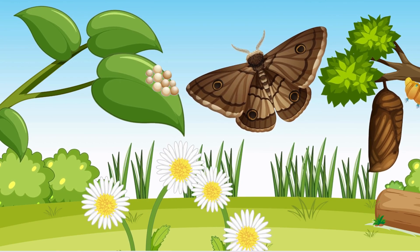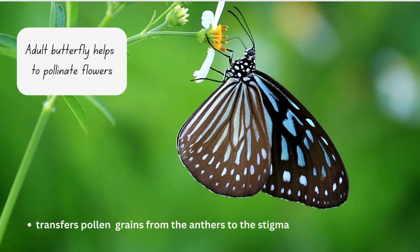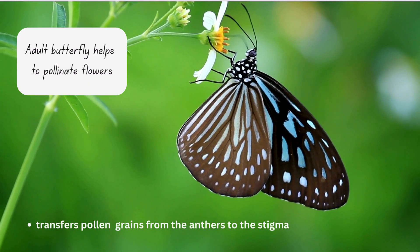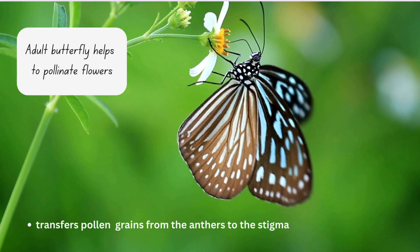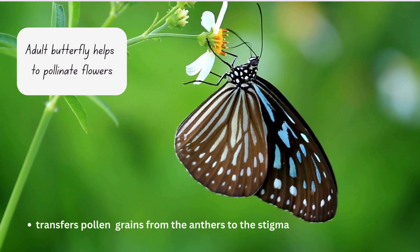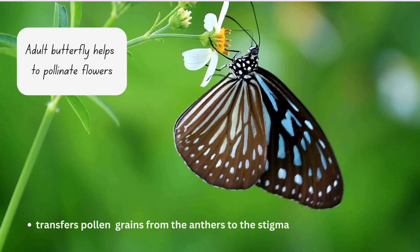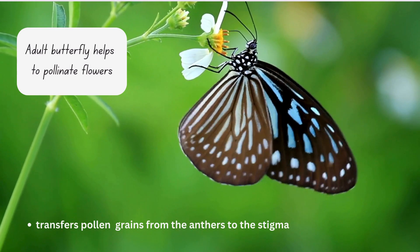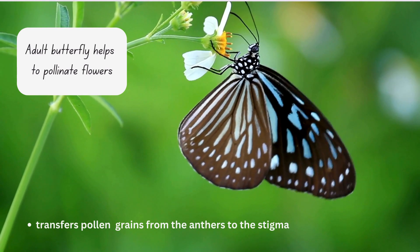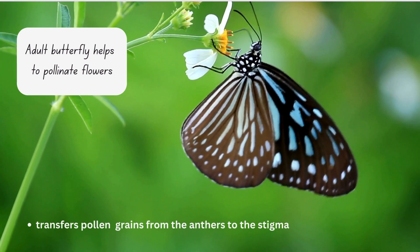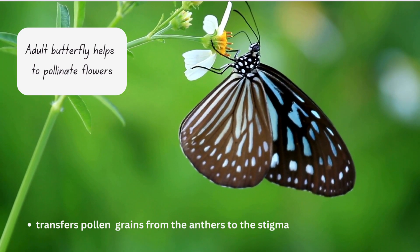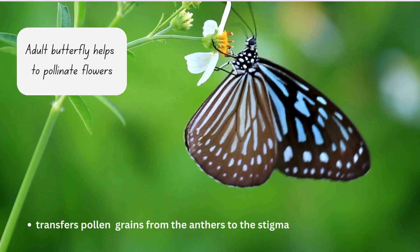The adult butterfly is beneficial for flowering plants as it helps them to pollinate. They transfer pollen grains from the anthers to the stigma of flowers.